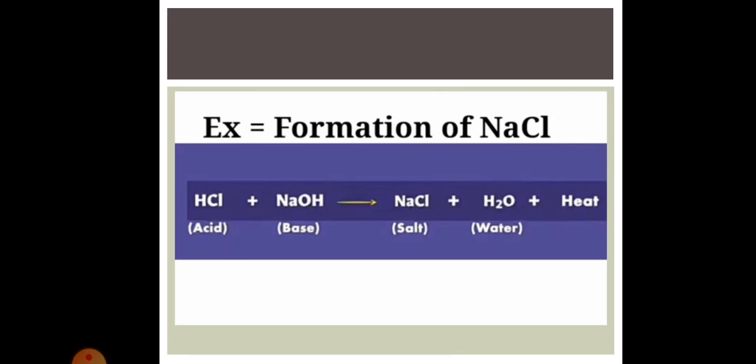Formation of NaCl, i.e. sodium chloride salt, is a good example of neutralization. When hydrochloric acid reacts with the base NaOH, i.e. sodium hydroxide, a new salt is formed which is known as sodium chloride NaCl. During this process, water and heat are produced, as you can see in this chemical equation.